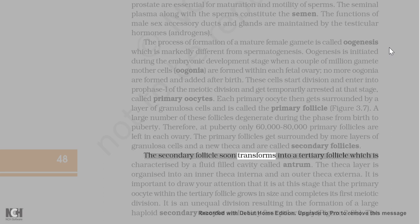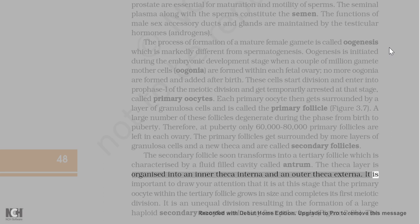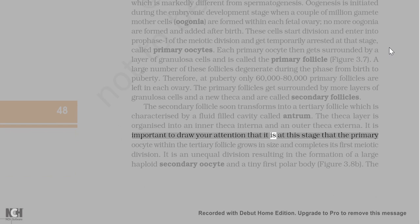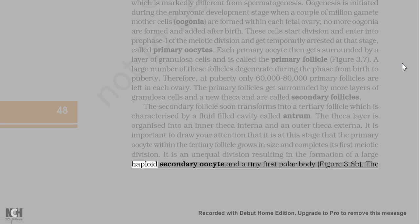The secondary follicle soon transforms into a tertiary follicle which is characterized by a fluid-filled cavity called antrum. The theca layer is organized into an inner theca interna and an outer theca externa. It is at this stage that the primary oocyte within the tertiary follicle grows in size and completes its first meiotic division. It is an unequal division resulting in the formation of a large haploid secondary oocyte and a tiny first polar body.